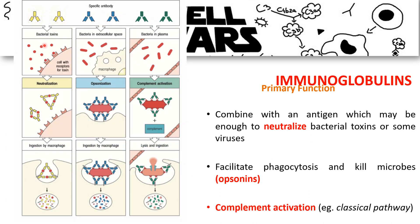The different functions of our immunoglobulins include: a specific antibody can facilitate phagocytosis by acting as opsonins, facilitate killing of microorganisms through neutralization of antigen, and also stimulate complement activation.